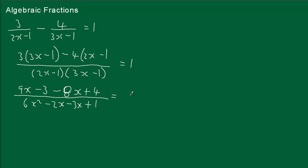Before we go any further — that equals 1. For any fraction to equal 1, the top must be the same as the denominator. It's the same as 4 quarters, or 8 eighths, or a million over a million — they must equal 1. So we know the numerator equals the denominator. Simplifying the top: 9x minus 8x is x, and minus 3 plus 4 is plus 1.